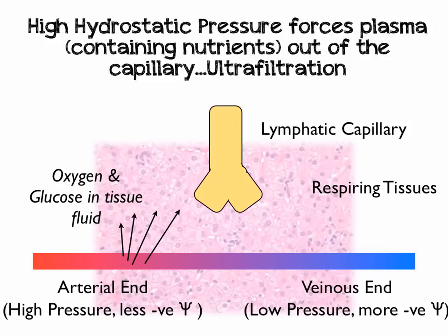Once it's left and is bathing the tissues, we call it tissue fluid. This whole process is known as ultrafiltration, where we're leaving behind the big molecules — your red blood cells, larger proteins — in the blood. That has a really important effect on the water potential of the blood as it moves down towards the venous end, which now has a more negative water potential because there are relatively more solutes inside the venous end of the capillary.